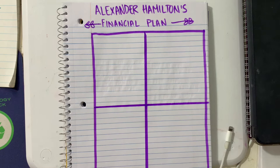Hello boys and girls, today we're going to be discussing Alexander Hamilton's financial plan to reduce the national debt and build our economy.